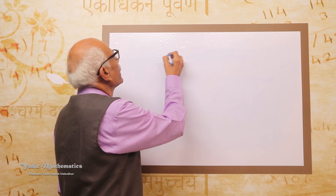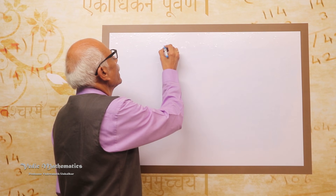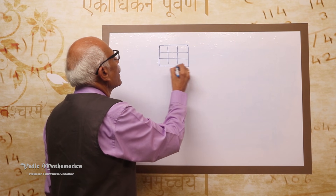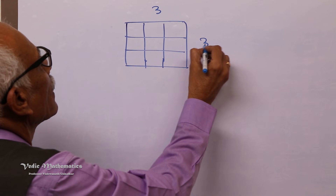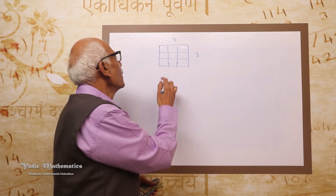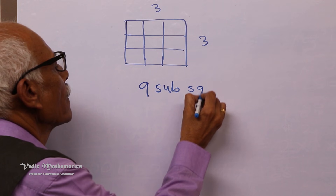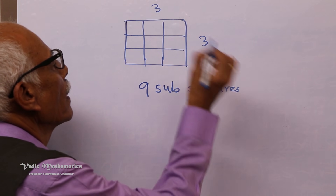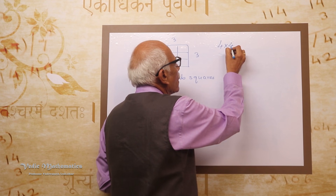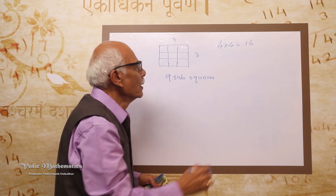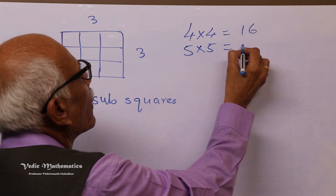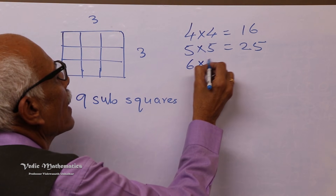A magic square has an equal number of rows and columns. For example, a 3 by 3 square has 3 squares horizontally and 3 vertically, giving 9 sub-squares. The minimum magic square is 3 by 3, followed by 4 by 4 which has 16 houses, then 5 by 5 with 25 sub-squares, 6 by 6, and so on.